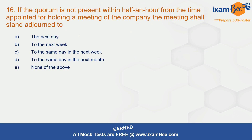Question 16: if the quorum is not present within half an hour from the time appointed for holding a meeting of the company, the meeting shall stand adjourned to the same day in the next week — option C. This is section 103 of the Companies Act.